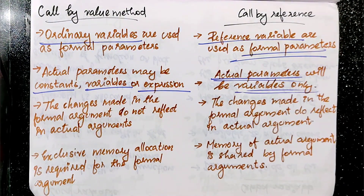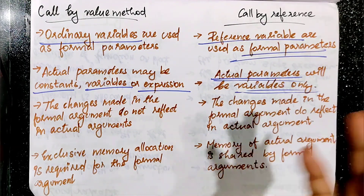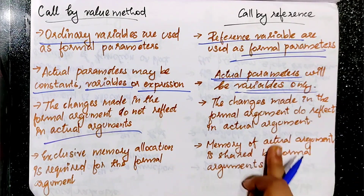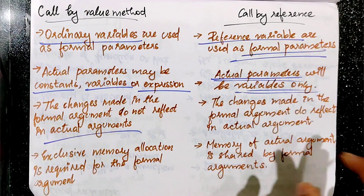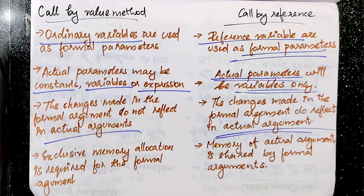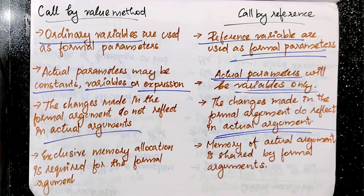The changes made in the formal argument do not reflect in the actual argument in call by value. In call by reference, changes in the formal argument will reflect in the actual argument. For call by value, separate memory is allocated. But for call by reference, memory of the actual argument is shared by the formal argument.